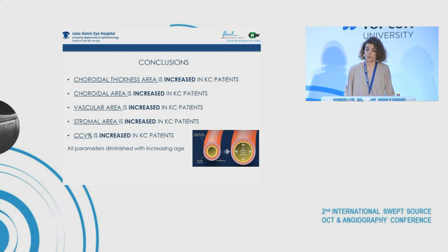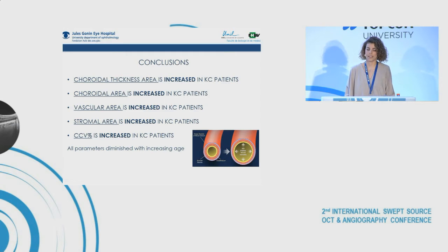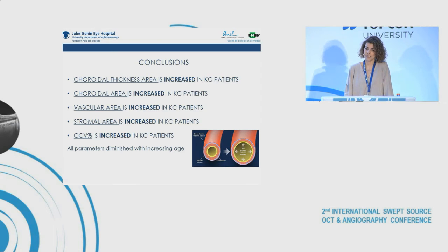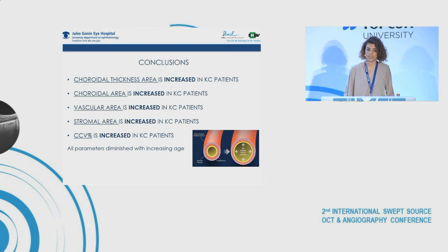To conclude: choroidal thickness and choroidal area are increased in keratoconus patients. Vascular area, stromal area, and vascularity index are also increased. All these parameters diminish with increasing age.